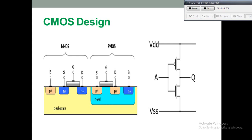The Twin-Well or Twin-Tub process is one where both types of wells — N-well and P-well — are present. The N-well is used for PMOS device fabrication and the P-well is used for NMOS device fabrication. This process is required when we want to optimize different parameters like threshold voltage, body effect, and others independently.